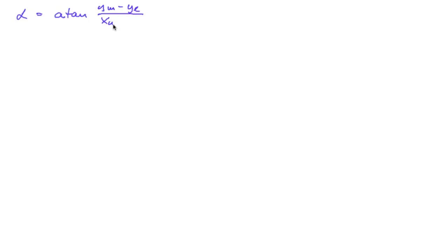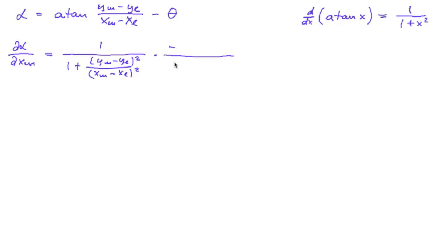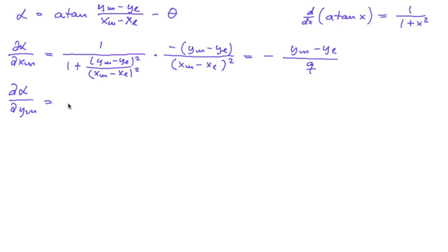Now let's do the same for alpha. Alpha was the arctangent of (ym minus yl) divided by (xm minus xl) minus theta. The partial derivative with respect to xm uses the derivative of arctangent, which is 1 divided by (1 plus x squared). So we get 1 divided by (1 plus the argument squared) times the derivative of the argument, giving minus (ym minus yl) divided by q. By a similar computation, the partial derivative with respect to ym is (xm minus xl) divided by q.